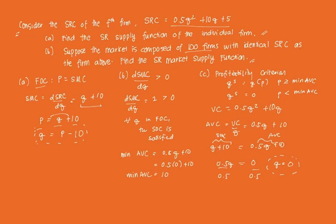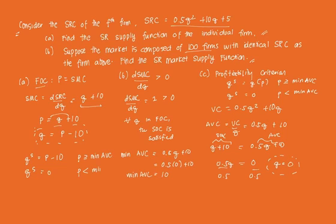The individual short-run supply function is: QS = P − 10 for all values where price is greater than or equal to minimum AVC (which is 10), and QS = 0 when price is less than minimum AVC. And that's how we derive the short-run supply function of an individual firm.